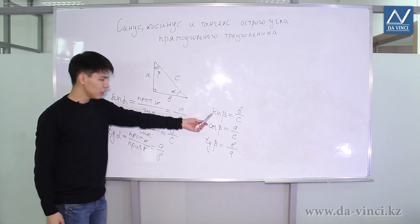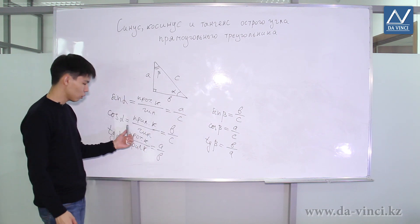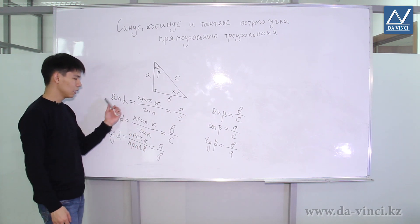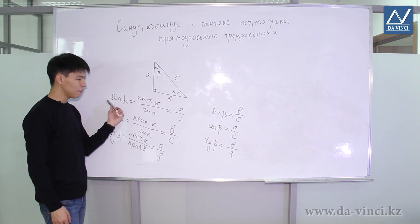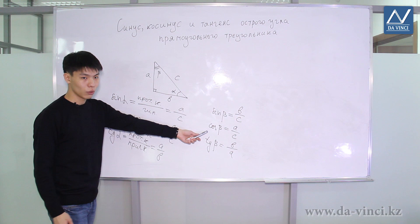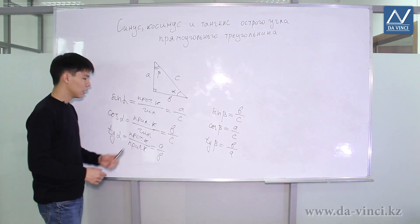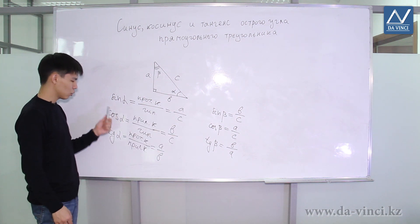Note that the sine of beta is equal to the cosine of alpha, and vice versa — the sine of alpha turned out to be equal to the cosine of beta.